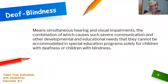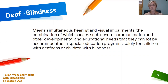Deaf-blindness is a simultaneous hearing and visual impairment, the combination of which causes severe communication and other developmental and educational needs that cannot be solely accommodated by special education programs for children with only deafness or only blindness.